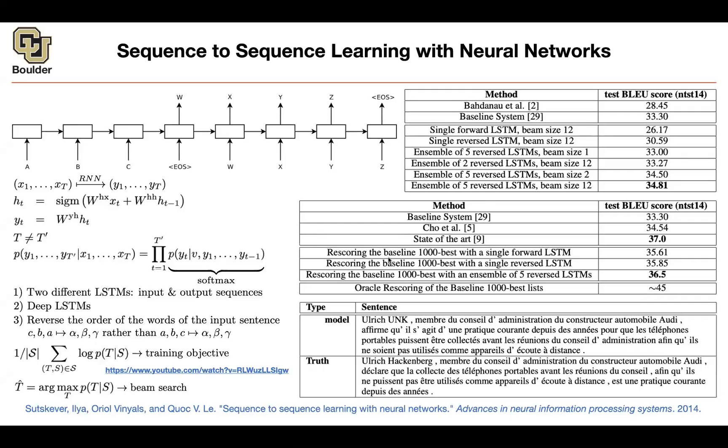I think we are finishing right on time. For those of you who want to leave, have classes, you can leave. For those of you who want to stay and ask questions, I'll be around. Can you explain the ensemble of five reverse LSTMs? Like what does it mean when you combine five of them? Do you train five LSTMs separately and the output is re-ranked somehow? Yes.